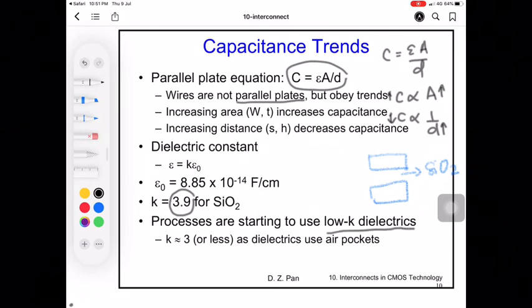Current technologies are starting to use low-k dielectrics. Capacitance is proportional to epsilon or permittivity, so if the low-k dielectric has low epsilon, then the capacitance value is also low. Ideally we want low capacitance because the delay tau is related to resistance and capacitance. We want low capacitance so we can reduce the delay.